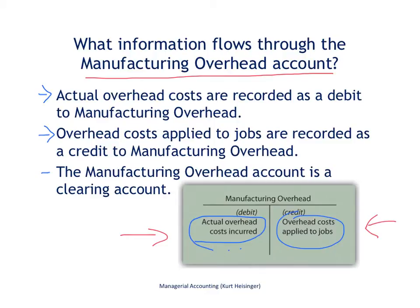The manufacturing overhead account is a clearing account — somewhat unique in that it is zero when the accounting period begins and zeroed out when the period ends. It does not appear on any financial statement. Think of it as a holding account: actual costs come in on the debit side, and costs go out on the credit side into Work in Process when applied to specific jobs. Our actual costs rarely match the costs applied to jobs, so we need to zero out this account at period end.